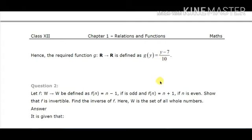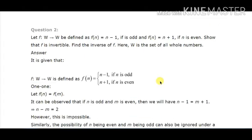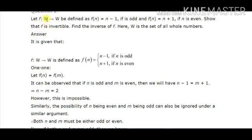The second question: let f be a function from W to W defined as f(n) = n - 1 if n is odd, and f(n) = n + 1 if n is even. We have to show that f is invertible and find the inverse of f, where W is the set of whole numbers.